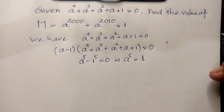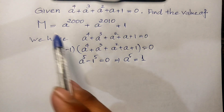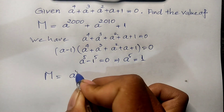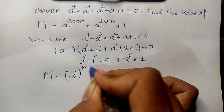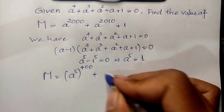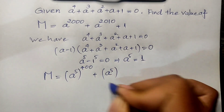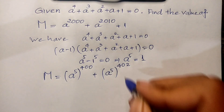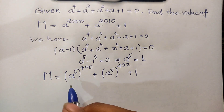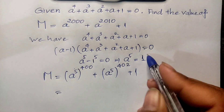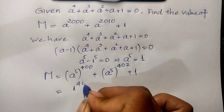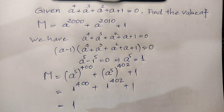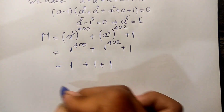Now I can use a⁵ = 1 to find the value of the expression. We have m = a^2000 + a^2010 + 1. I rewrite this as (a⁵)^400 + (a⁵)^402 + 1. Replacing a⁵ with 1, I get 1^400 + 1^402 + 1, which equals 1 + 1 + 1 = 3.